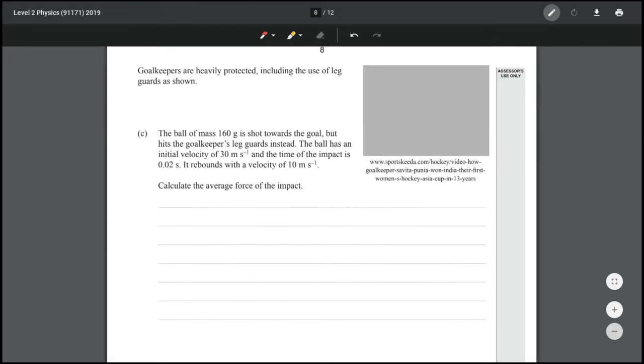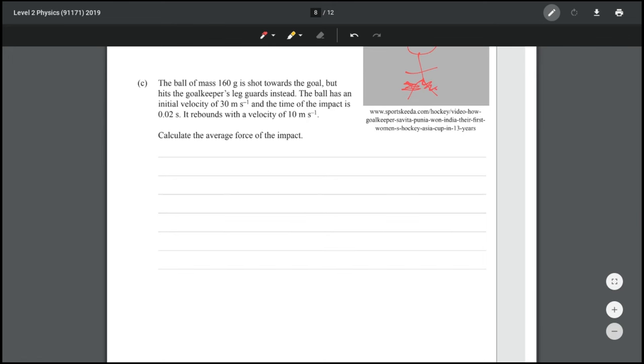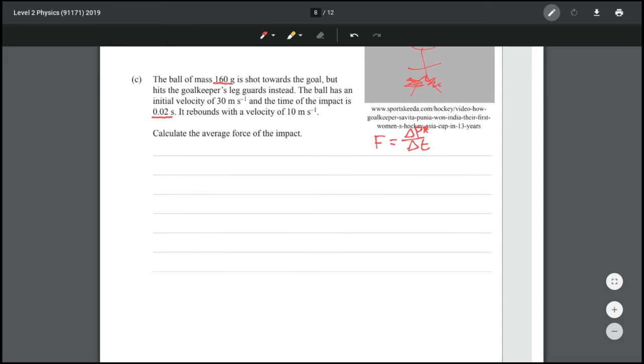Goalkeepers are heavily protected including the use of leg guards. The ball has a mass of 160 grams, it's shot towards the goal but hits the goalkeeper's leg guards instead. The ball has an initial velocity of 30, the time of the impact is 0.02, it rebounds with the velocity of 10 meters per second. Calculate the average force of the impact which is going to be a bit of a process. So to find the force we're going to need to use the equation force equals the impulse or change in momentum divided by the duration, where we have the time of the impact here which means we just need to find our change in momentum. To find the change in momentum we just need to consider the mass of the ball and its change in velocity.